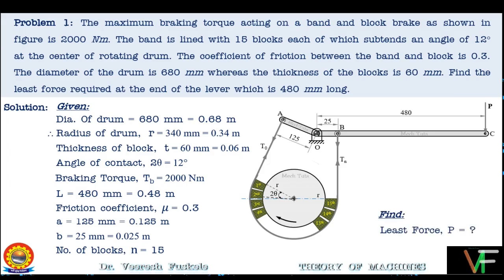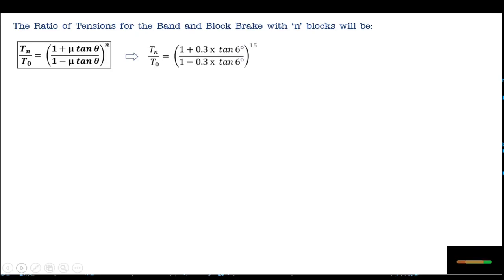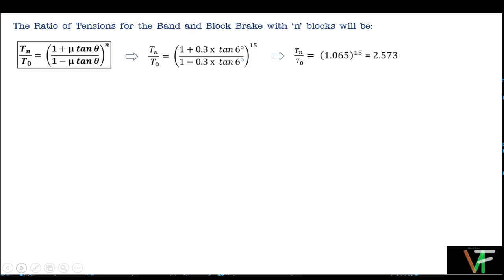Since distance A is greater than B, the force P must be applied at C downwards, and P will be least if the end of the band attached to A is slack and the end attached to B is tight. This is only possible if the drum rotates in the clockwise direction. The ratio of tensions for band and block brake with N blocks is: Tn/T0 = ((1 + μ·tan θ)/(1 − μ·tan θ))^N. Substituting μ = 0.3, θ = 6°, and N = 15: Tn/T0 = ((1 + 0.3·tan6°)/(1 − 0.3·tan6°))^15, which gives 1.065^15 = 2.573.